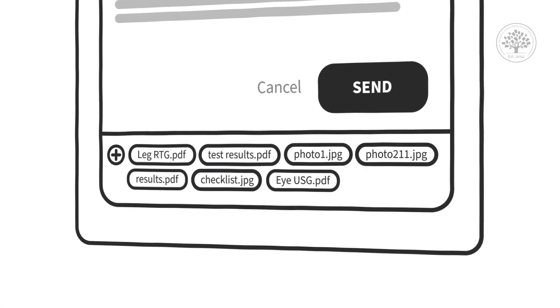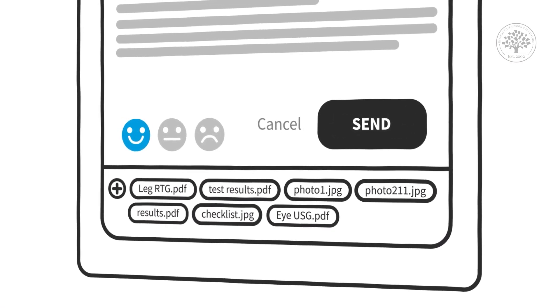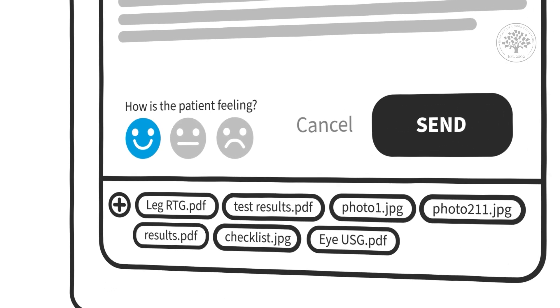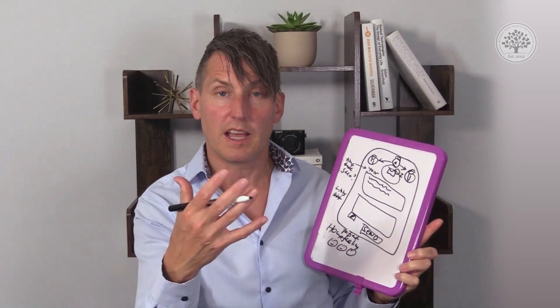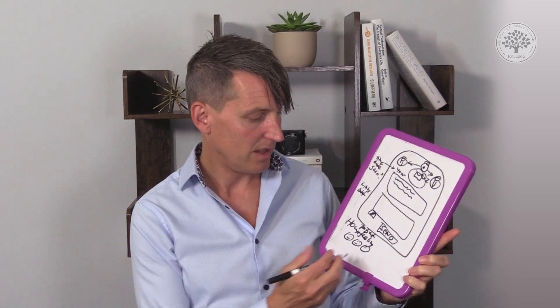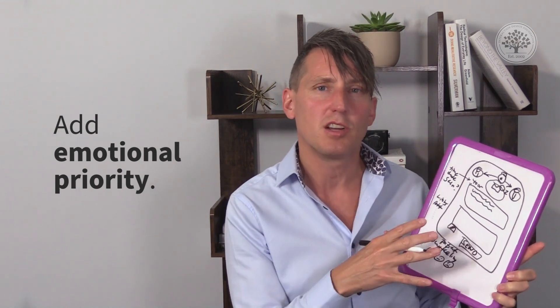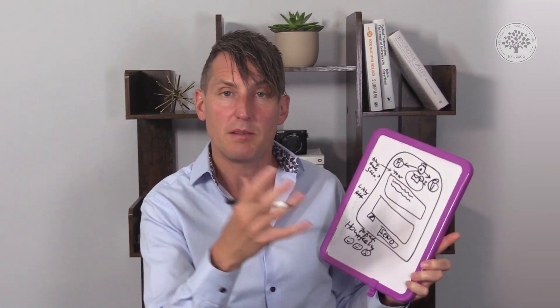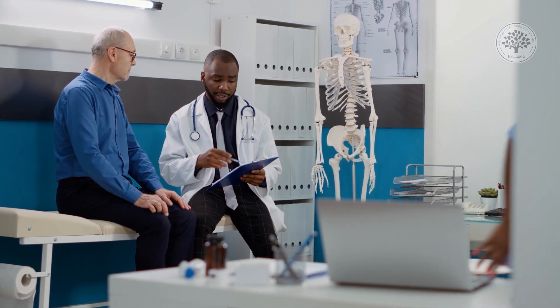I'm going to have some emoticons for how the patient is feeling — almost like 'how are you feeling?' So I'll take notes on how the patient feels. In this case, the user is a parent acting as a patient advocate. That way I can add some emotional priority to the message, because if the doctor knows you're happy but you're reporting something, the doctor knows how to respond — just like they could tell in real life.